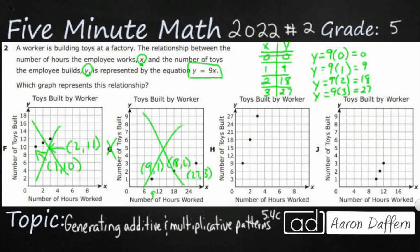All right. H is looking pretty good. I've got a 1, 9. Yep. 2, 18. Yep. 3, 27. Okay. H looks great.